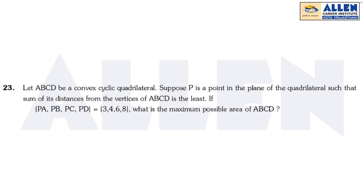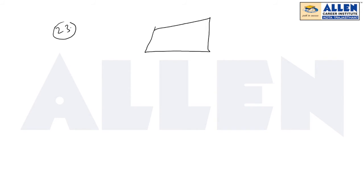Hello friends, let's start with question number 23. It is saying there is a convex quadrilateral. Now P is a point whose sum of distances from the vertices is the least. So I am claiming that P must be the point of intersection of the diagonals. Let's prove our claim.